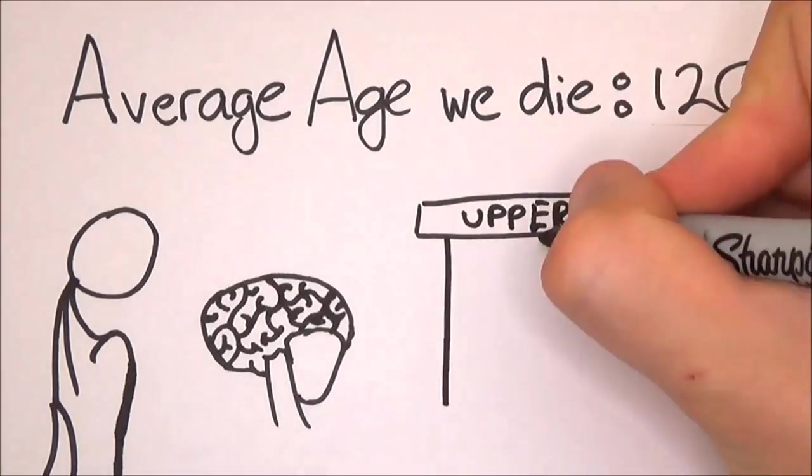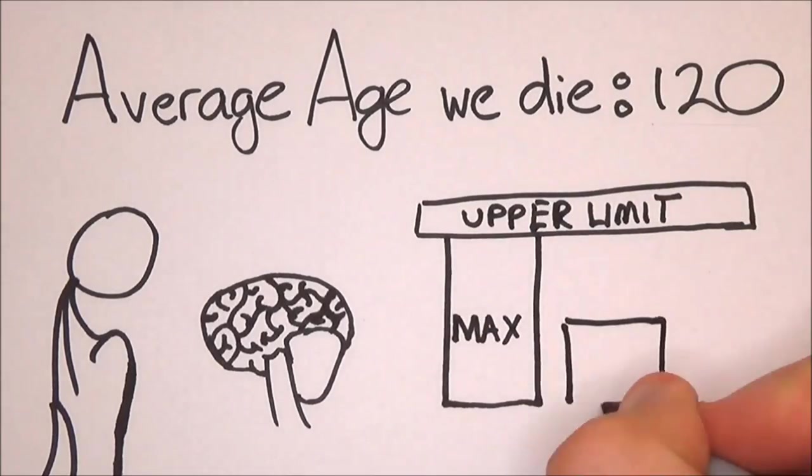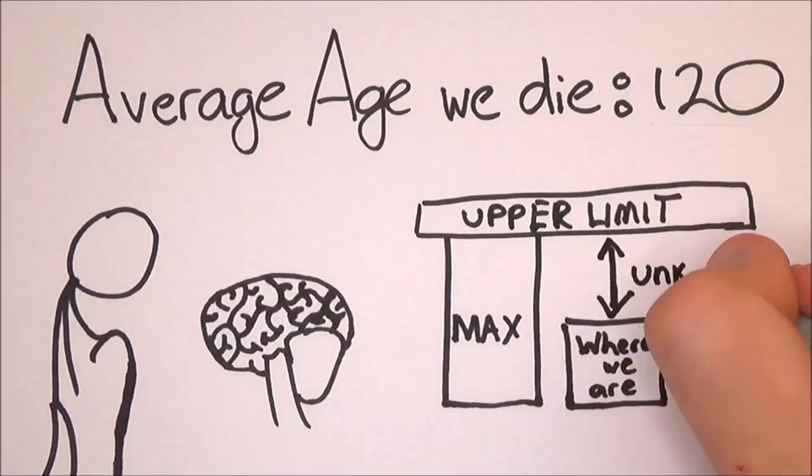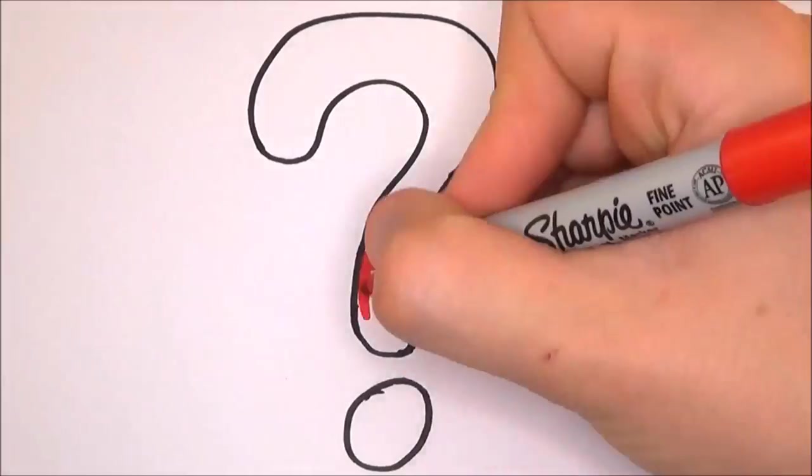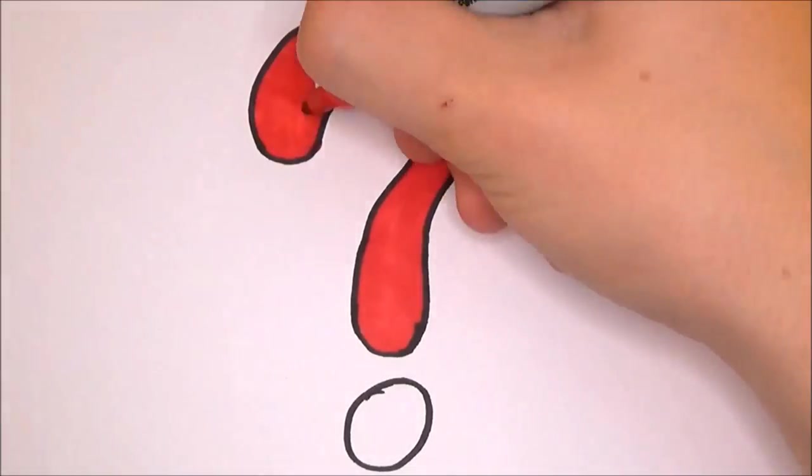Currently, researchers believe that human lifespan does have an upper limit, so life expectancy won't just keep increasing indefinitely. What this age limit might be, however, isn't clear, and probably won't become so for many years to come.